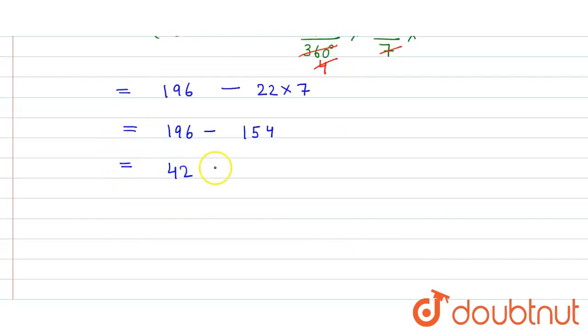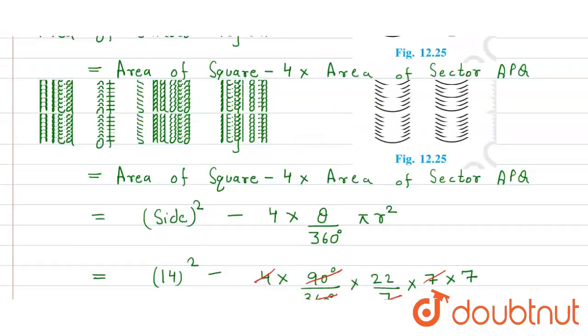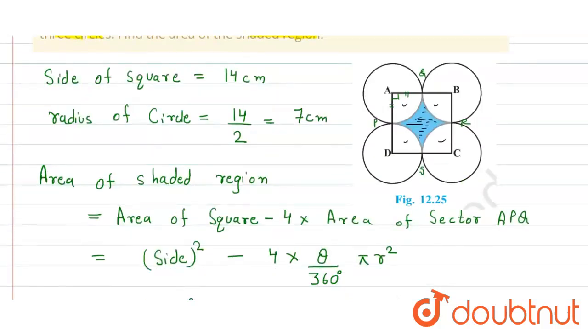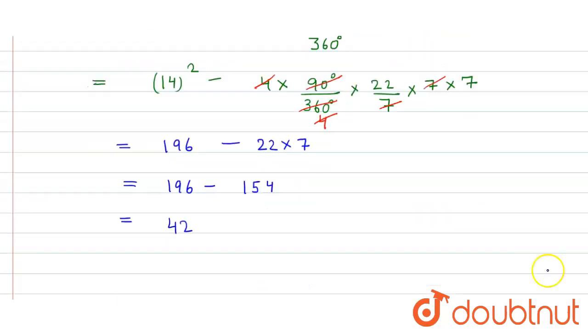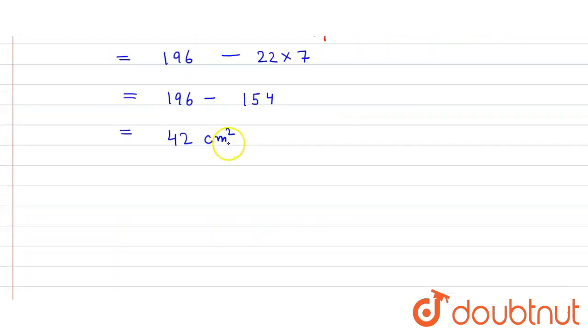That will be equal to 196 minus 154, and when we subtract we get 42 centimeter square. That's the area of the shaded region and that's our answer.